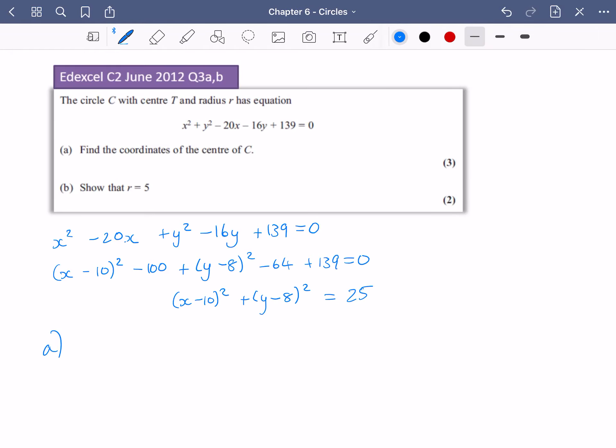So for part a of the question, the coordinates of the center, the center is just going to be (10, 8). Okay. And then part b of the question, the radius is just going to be the square root of 25, which is 5, which is exactly what they said in the question.